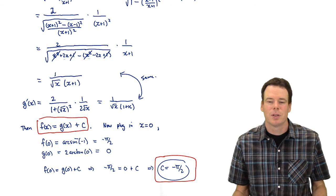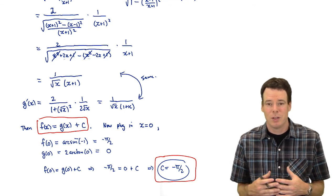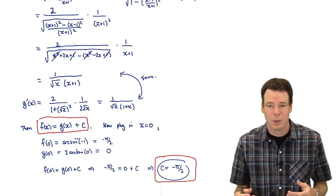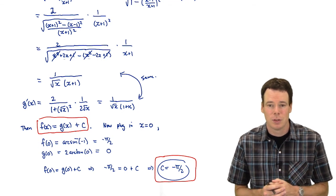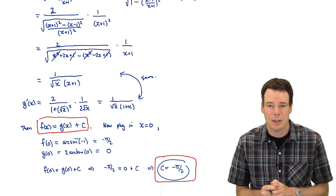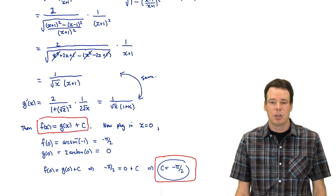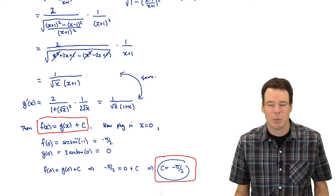So we saw that the mean value theorem can be used in a somewhat interesting and perhaps surprising way — we were able to show a relationship between two functions and thereby prove a trigonometric identity. That's it for this section. Thanks very much for watching, and we will see you next time.